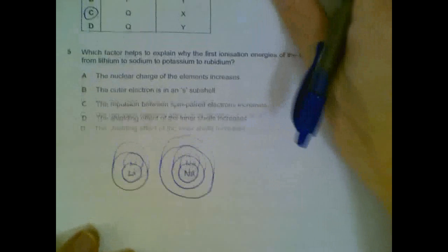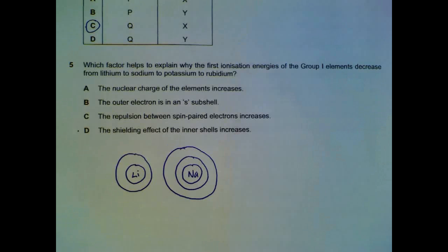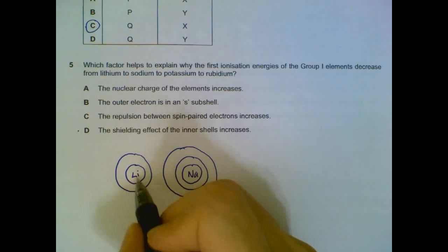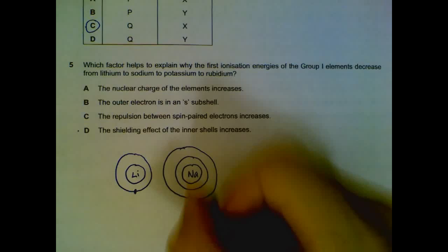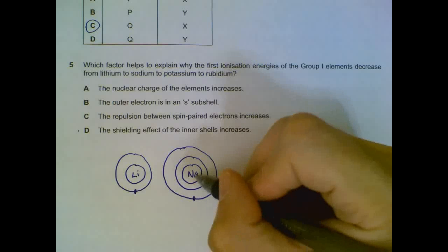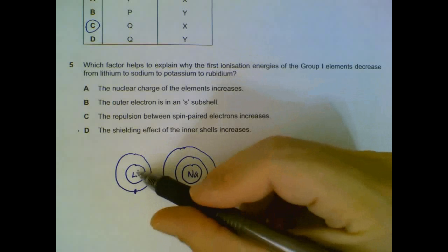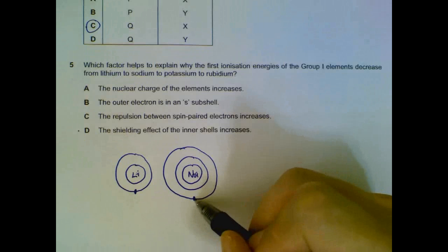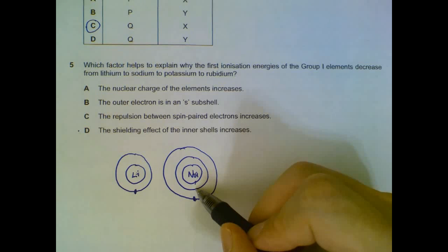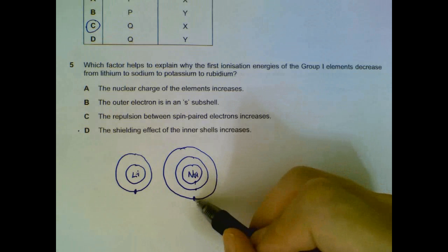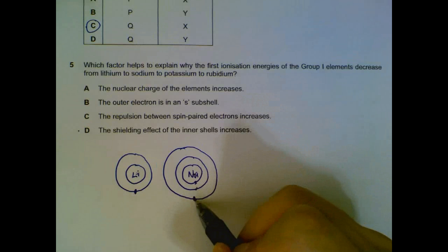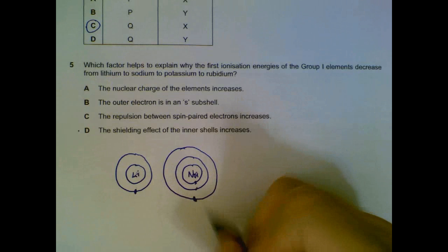Which factor explains why first ionization energy decreases down Group 1? Using lithium and sodium as an example: lithium has two shells and sodium has three shells. The electrons are held by the protons in the nucleus. The further the electron is from the nucleus, the greater the shielding effect — the inner shells minimize the attraction between the nucleus and the outer electron. So it is easier to remove the outer electron because it is less attracted to the center.